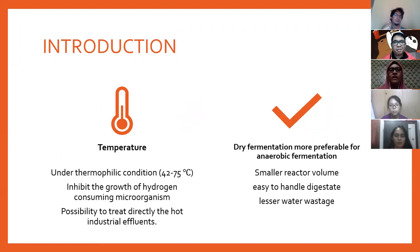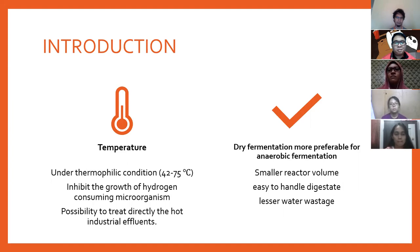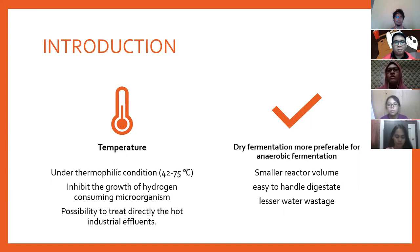For the temperature, in the study they used thermophilic conditions because it can inhibit the growth of hydrogen-consuming microorganisms and it is possible to treat directly the hot industrial influent. Dry fermentation is more preferable for anaerobic fermentation because a smaller reactor volume can be used, it is easy to handle, and uses less water.